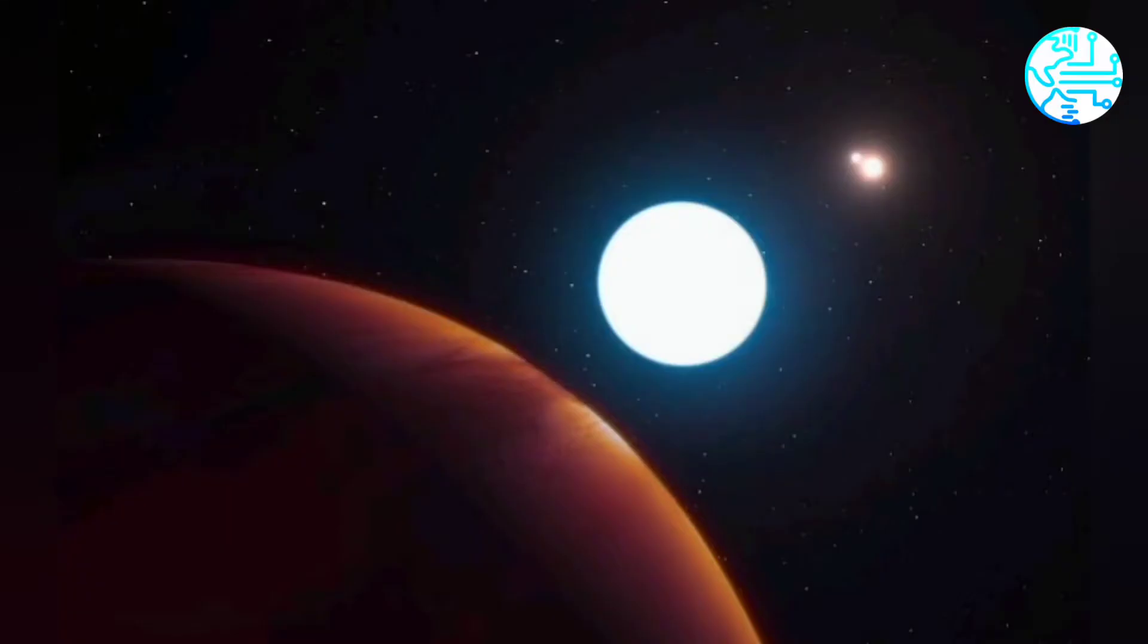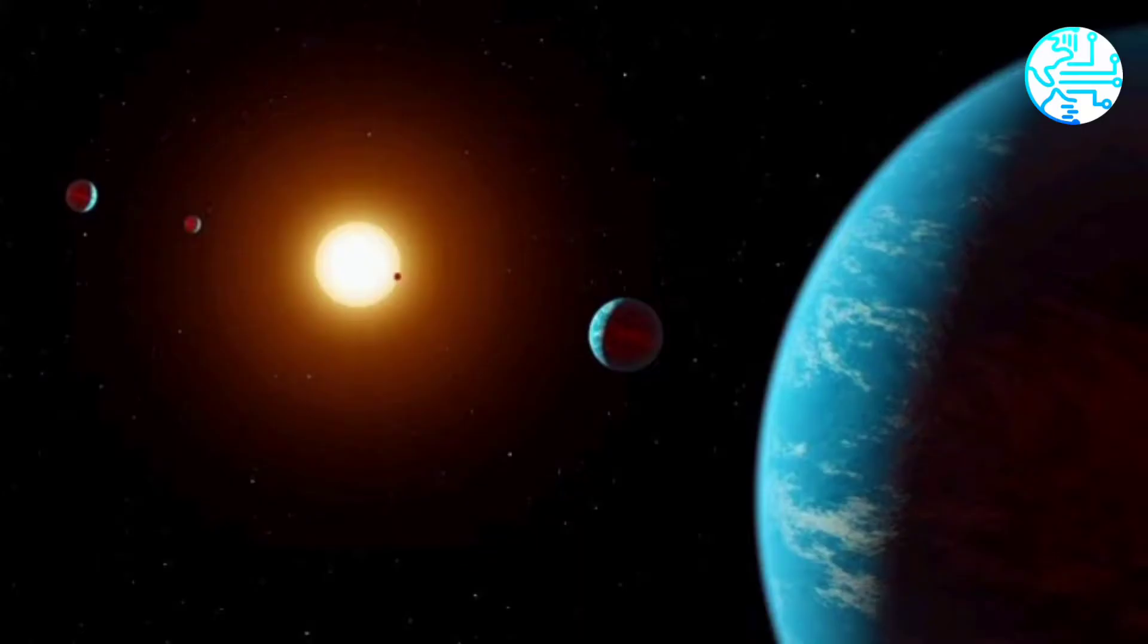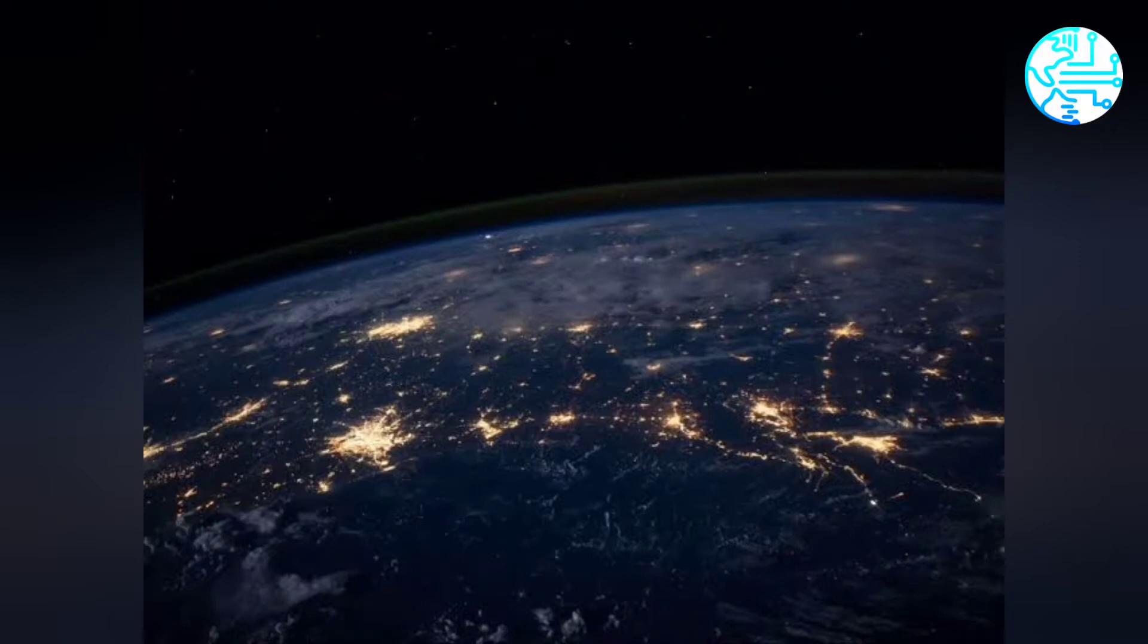A new rogue Earth-sized planet has been discovered by scientists at University of Warsaw. This is said to be the smallest free-floating planet found up until now, and it is sized somewhere between Earth and Mars.